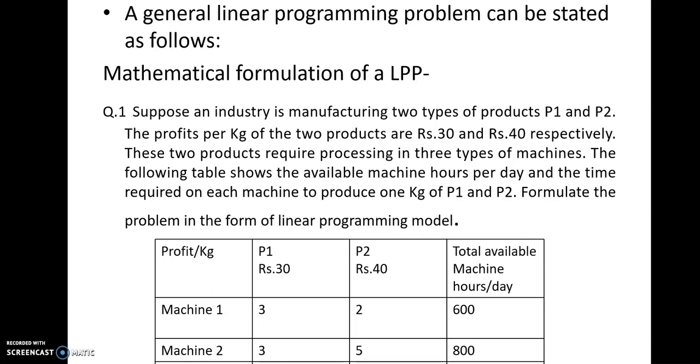We can form a table of this information. Two products are given, so we will write in column P1 and P2. The profits is given respectively. P1, Rs.30, P2, Rs.40. These two products require processing in three type of machines. So we will make a row, we will write machine 1, machine 2, machine 3. Time is given in hours per day. 3 hours per day on machine 1. Product 2, 2 hours per day on machine 1. And total limitation time with machine is 600 hours per day.